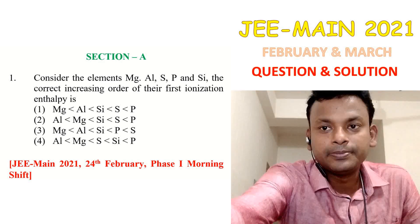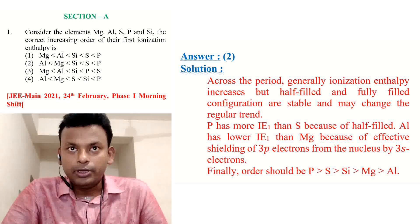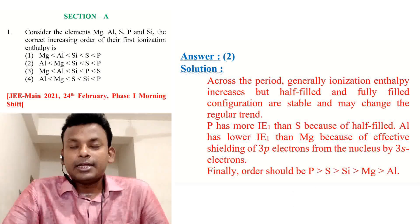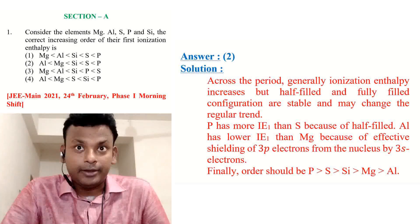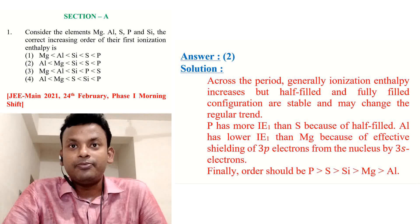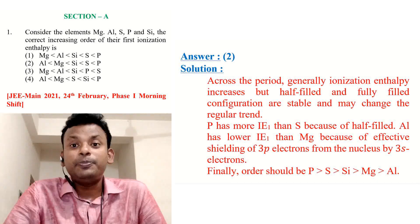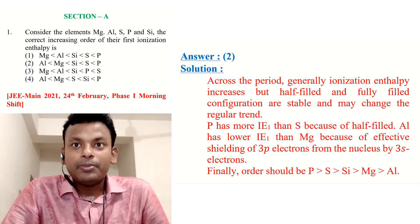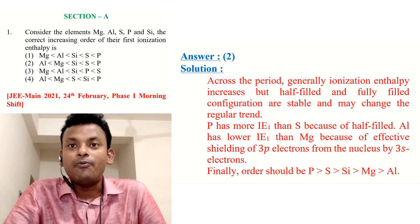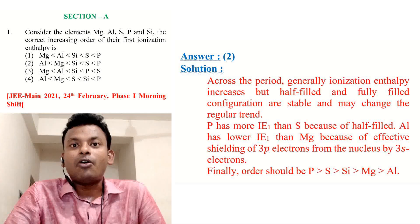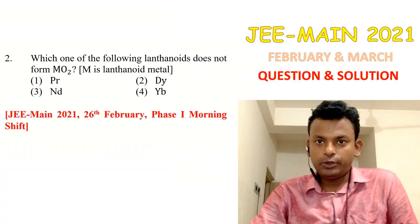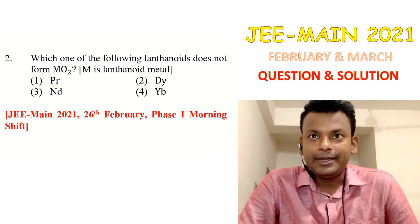Answer is option 2. Across the period, generally ionization enthalpy increases, but half-filled and fully-filled configurations are stable and may change the regular trend. Phosphorus has more first ionization enthalpy than sulfur because of half-filled p orbital — phosphorus has three electrons in 2p. Aluminium has lower ionization enthalpy than magnesium due to effective shielding of the 3p electron from the nucleus by the 3s electrons. Final order: P > S > Mg > Al. Option 2 is the right answer.